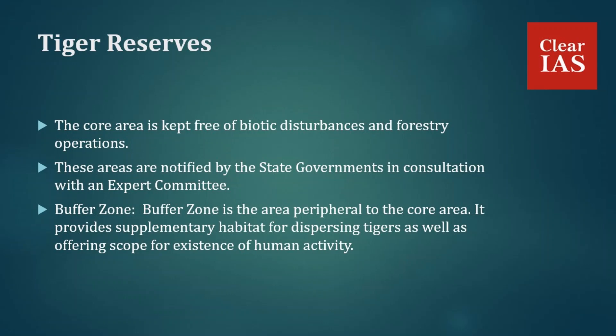Tiger reserves are divided into the core zone and buffer zone. The core area is kept free of biotic disturbances — forestry operations, collection of minor forest produce, human disturbances, grazing, etc. are not allowed. These areas are required to be kept inviolate for tiger conservation, without affecting the rights of scheduled tribes or other forest dwellers, and are notified by state governments in consultation with an expert committee.